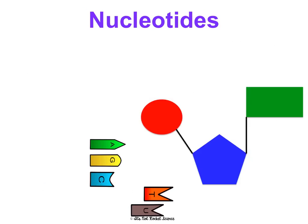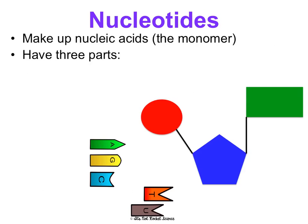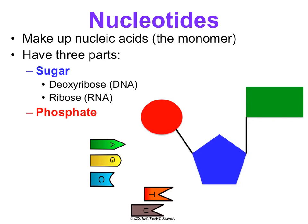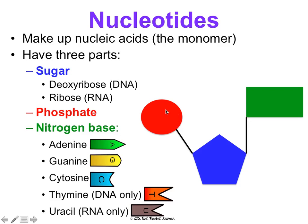Nucleic acids are made of nucleotides — nucleotides are the monomer, and nucleic acids are the polymer. Nucleotides have three parts: they have a sugar, which is either deoxyribose in DNA or ribose in RNA; they have a phosphate; and then they have a nitrogen base. There are five different nitrogen bases, which are all kind of different shapes.